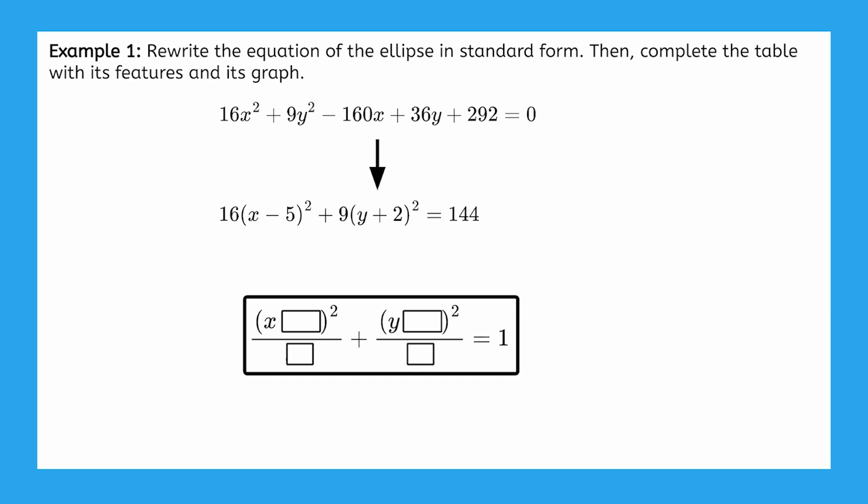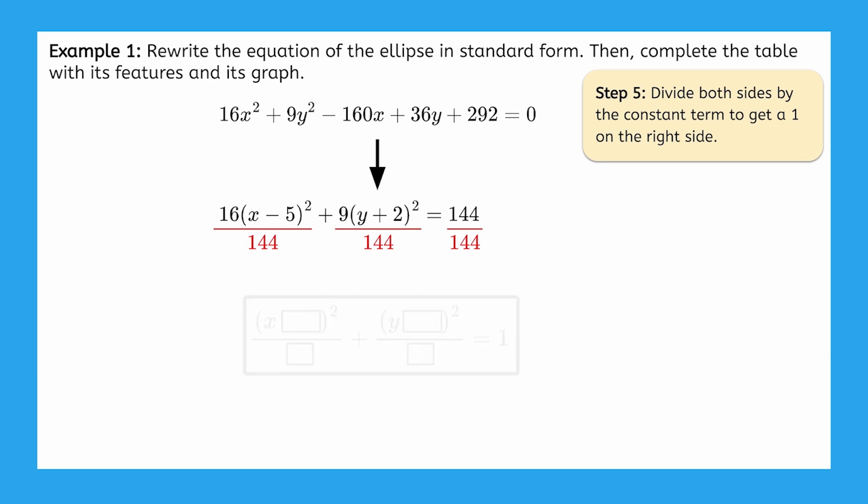Since we need a 1 on the right side, we divide both sides by the constant term. In this case, we divide by 144 and then simplify the fractions. Our standard form becomes x minus 5 squared over 9 plus y plus 2 squared over 16 equals 1.